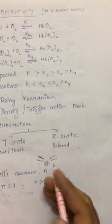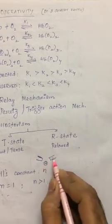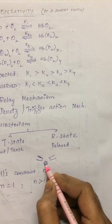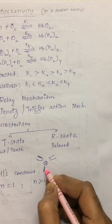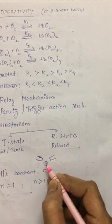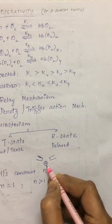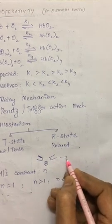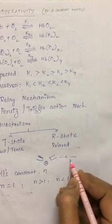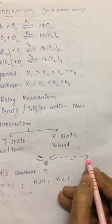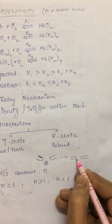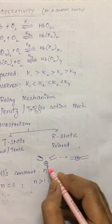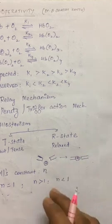In the T state, or deoxy hemoglobin, the iron is present below the plane of the porphyrin — it is not in the plane due to its larger size. Once it shifts into oxy hemoglobin, the size of the iron decreases and it falls into the plane of the porphyrin.